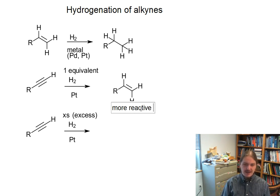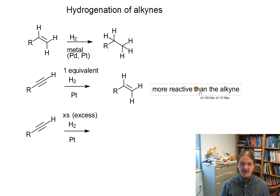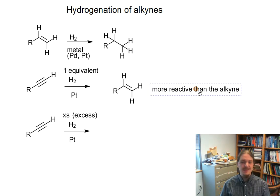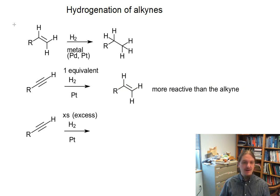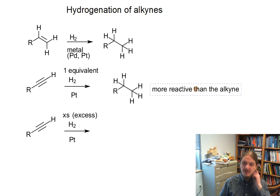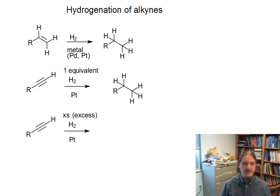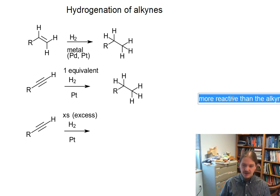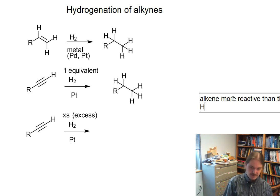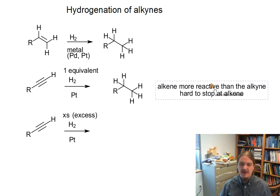But it turns out, unhelpfully, that the alkene is more reactive than the alkyne here. We'll encounter this situation often in organic chemistry where the product of a reaction is reactive again under the reaction conditions and may even be more reactive than the reactant. So even with one equivalent of hydrogen, this hydrogenation will reduce some of the alkyne all the way to the alkane. It is hard to stop after one hydrogenation.